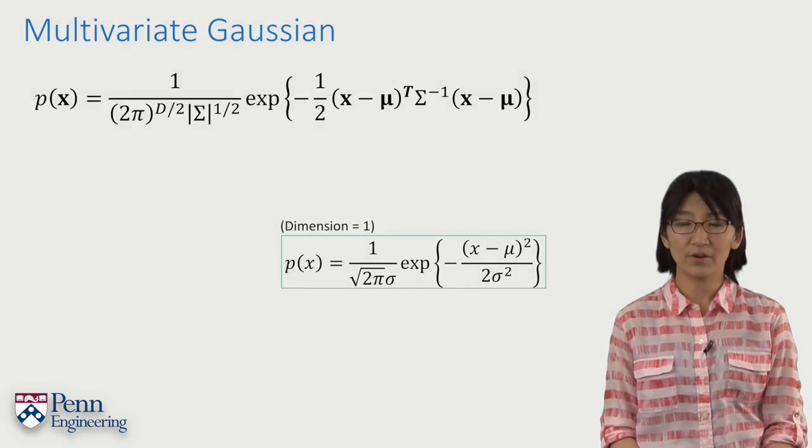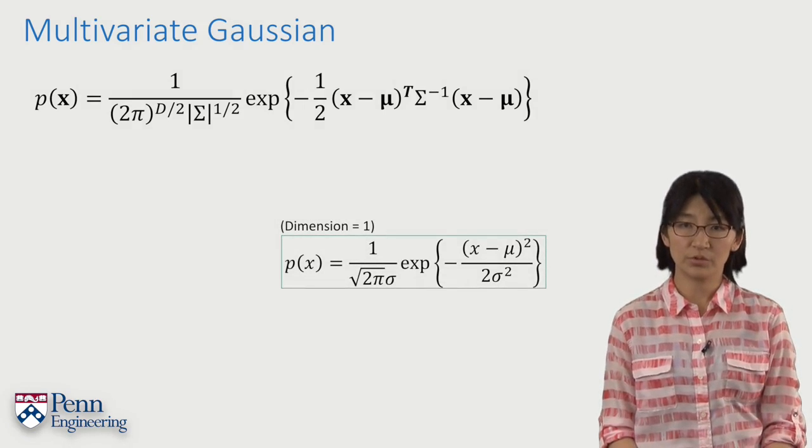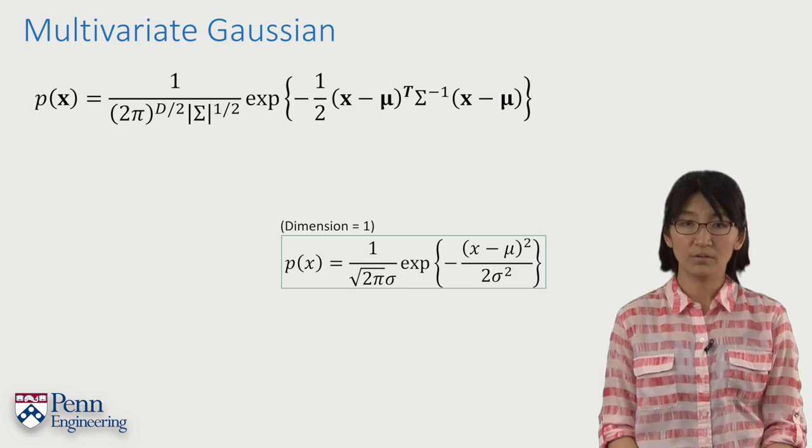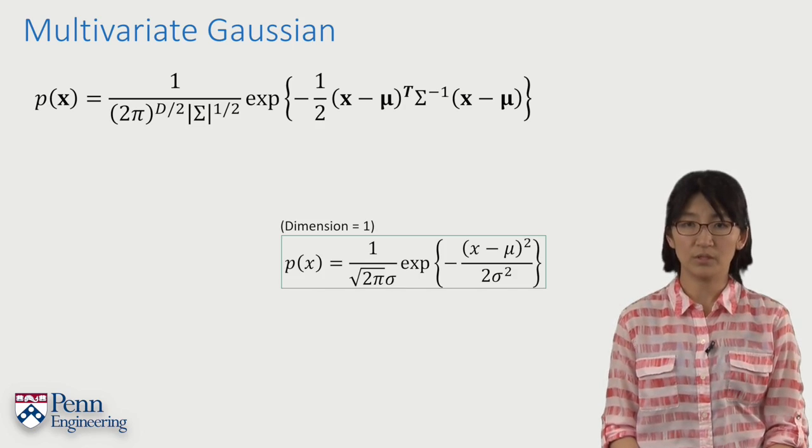This might look very complicated, but it has a similar structure as the 1D Gaussian density function. We'll be able to match the corresponding terms between the two.